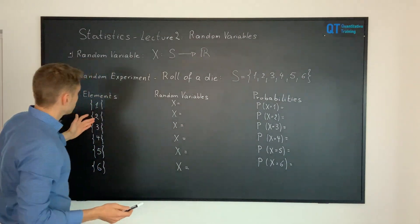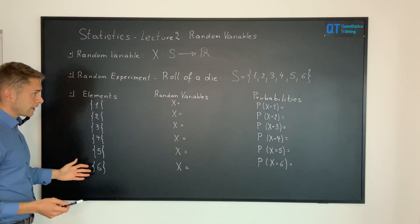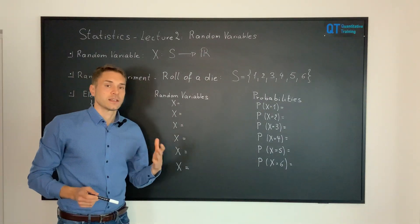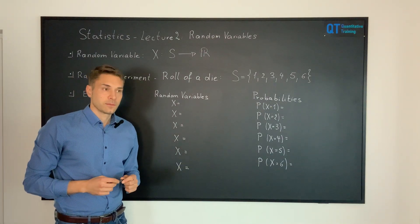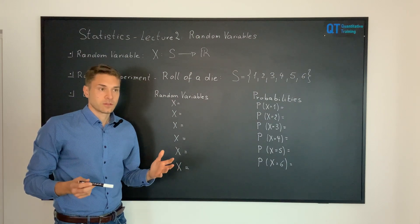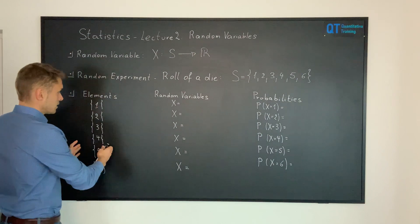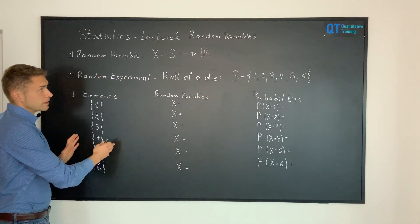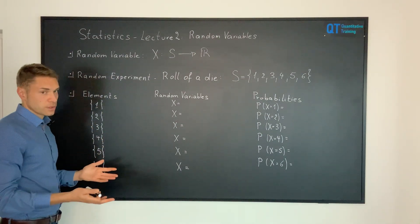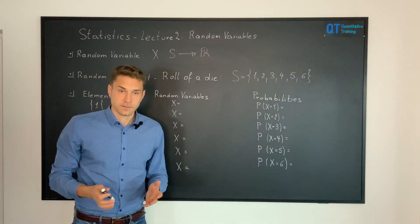We have six different elements — the singletons going from one up to six — and in this particular case it is quite natural to associate to the random variable a particular number. The mapping between the elements of the sample space into the set of real numbers is quite easy and natural because the die has six different faces, so we just take the six different numbers.